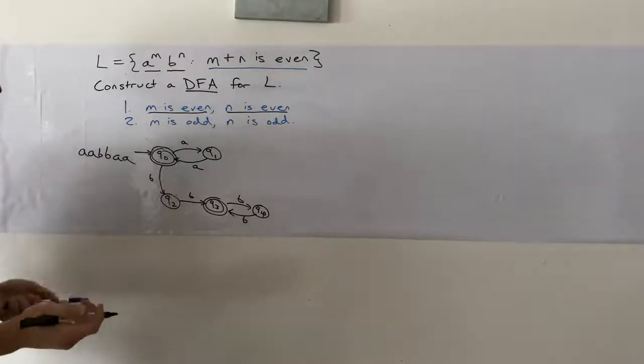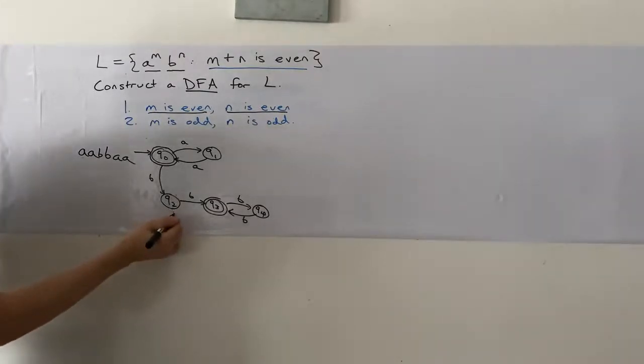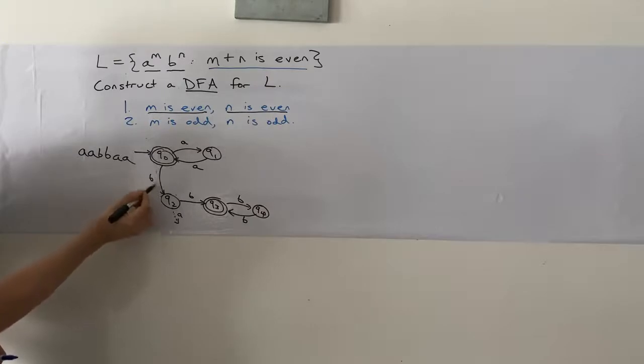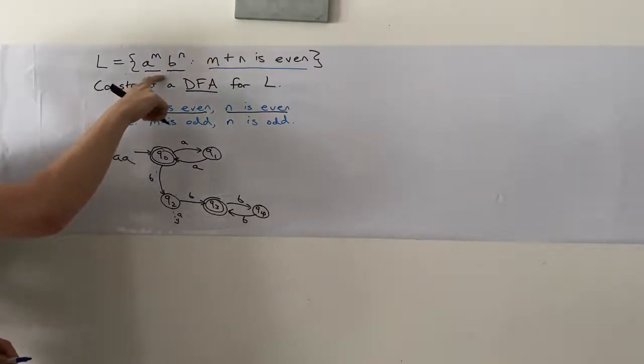It's not a DFA, of course, because there's no transition currently on A from any one of these states. But that tells us because we're reading a B on this transition, that means if we read another A, then it's not of the form that we want in the language for the strings.